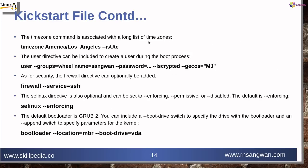Then we have the timezone directive — for example, timezone UTC. Then additional users: user --groups=wheel --name=sang1 --password=[encrypted] --iscrypted. For security, a firewall directive can optionally be added: firewall --service=[service]. The SELinux directive is simple and optional — you can set it to enforcing, permissive, or disabled. In my case I enabled it: selinux --enforcing.